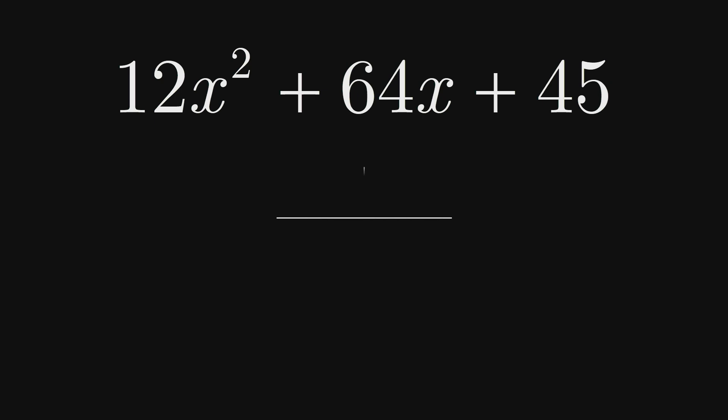So we start by finding two numbers that multiply to 12, perhaps 3 and 4. And two numbers that multiply to 45, perhaps 5 and 9. We then check the cross products to see if they total 64. 3 times 9 is 27, and 4 times 5 is 20. Since 27 and 20 do not add to 64, we need to use different values.